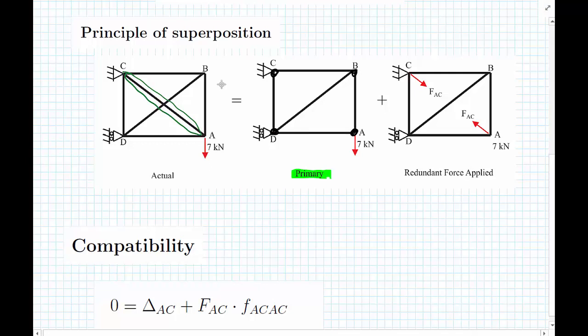As a result of applying this seven kilonewton load, we're going to get some deflection in this structure, and if we imagine a dotted line we'll have some deflection between A and C that shouldn't exist.